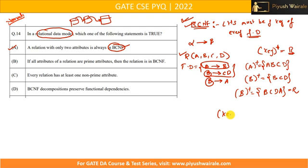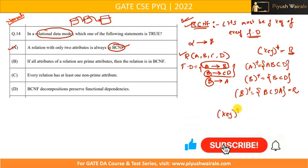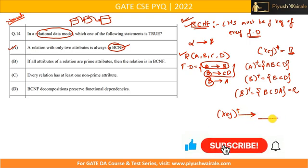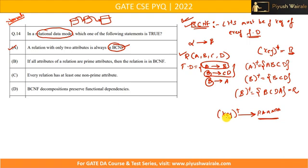Key means: if you take the closure of any attribute or set of attributes, it should give all the attributes present in relation R. So the left-hand side must be a key. We do not care about the right-hand side — it can be a prime attribute or a non-prime attribute, it doesn't matter. Left-hand side must be a key. This is the condition for BCNF.